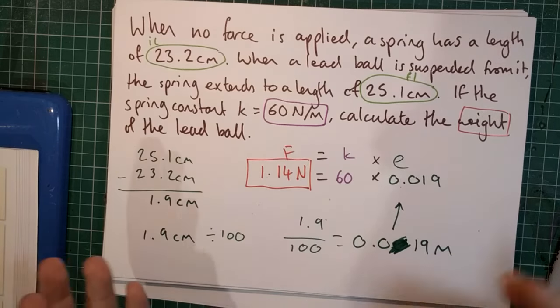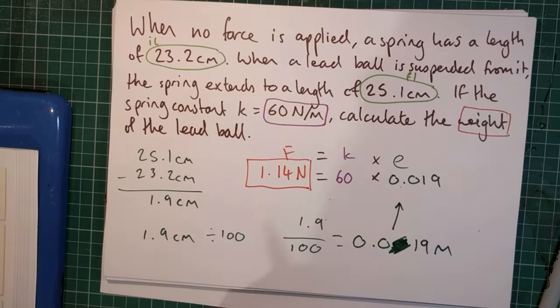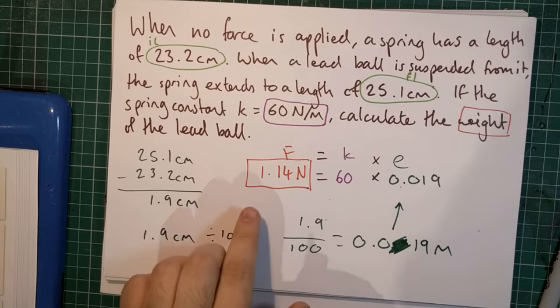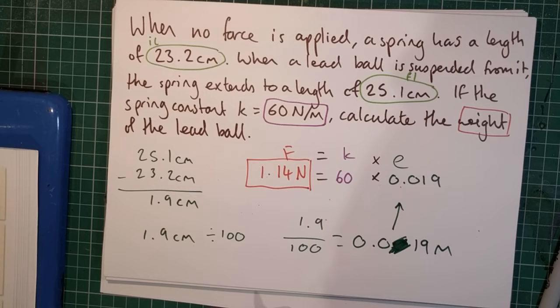You could then, as another step, calculate the mass of the lead ball if you knew where this experiment was being conducted. We can probably assume it's conducted on Earth, so the mass of the lead ball is probably going to be about 0.114 kilograms.